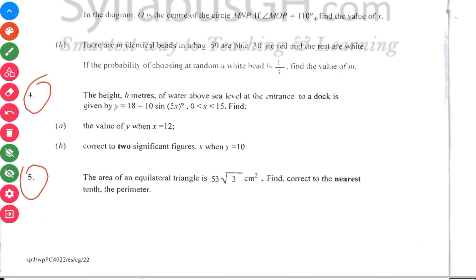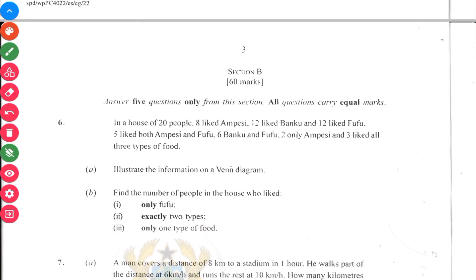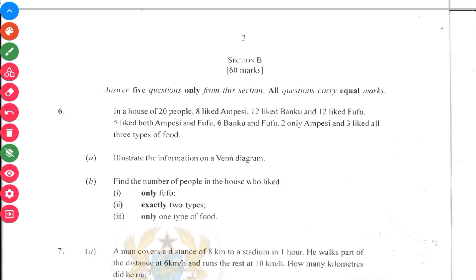Number five is a word problem question on an equilateral triangle. Number six here has to do with Venn diagram — I believe it's going to be a three-set problem.